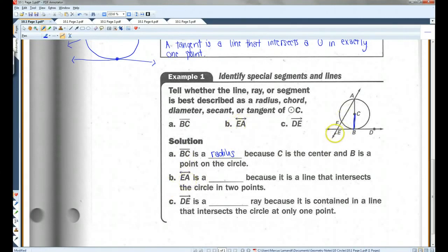Line EA, that's this line here. Line EA is a secant, because it is a line that intersects the circle in two points. Now, if they had been asking for segment EA, notice how there are no arrows, you would say that this is a chord, because a chord is a segment. A secant is a line. So because we're looking at the line, it's going to be a secant. But if they had asked for this, you would have written chord instead.